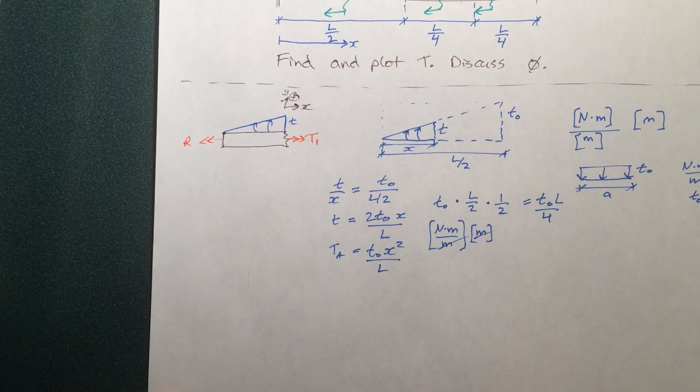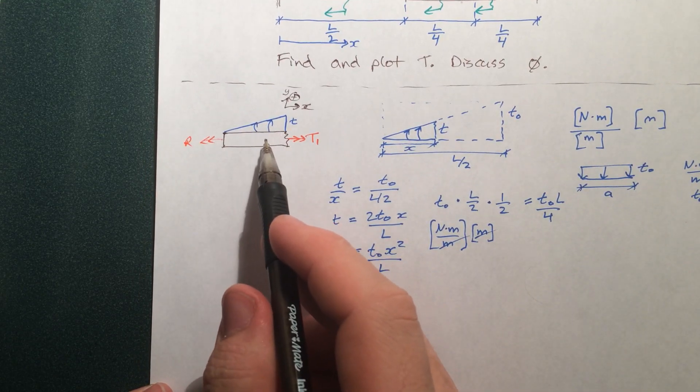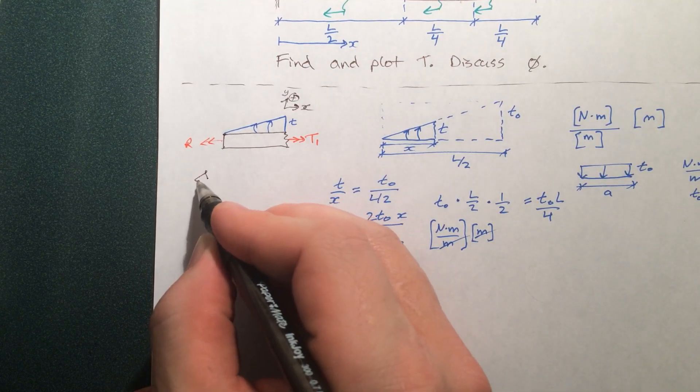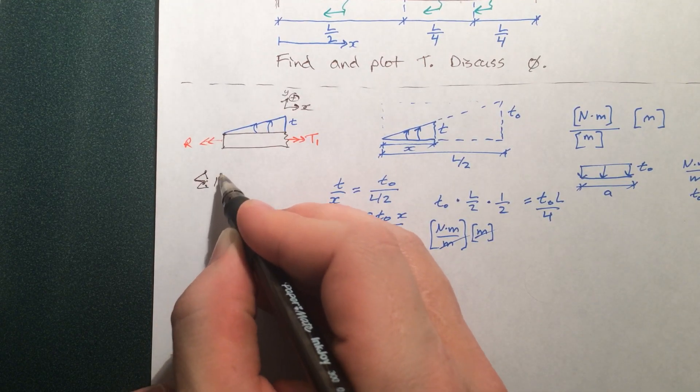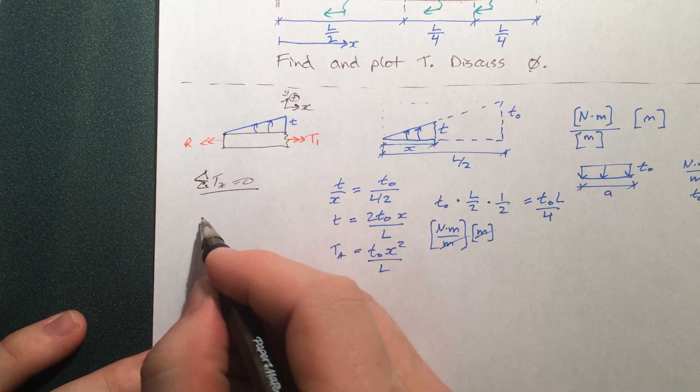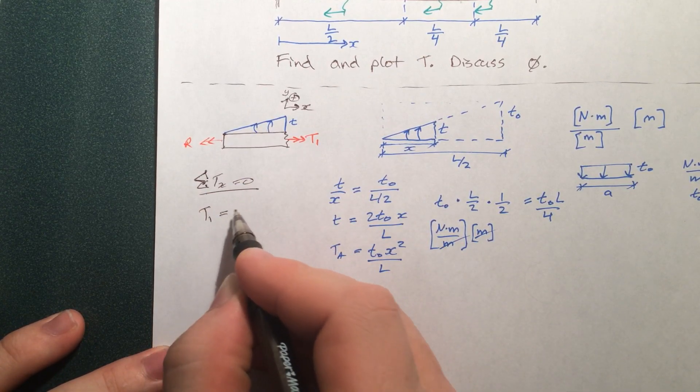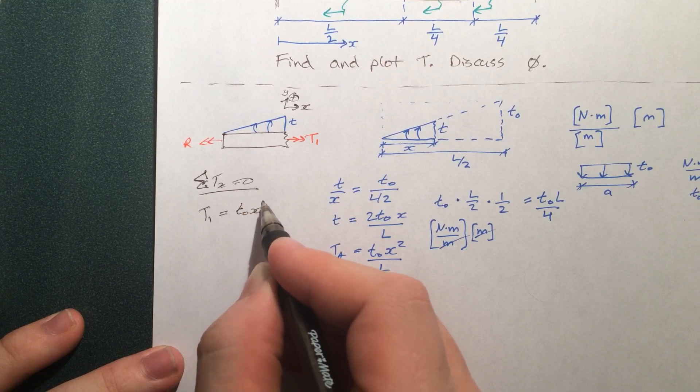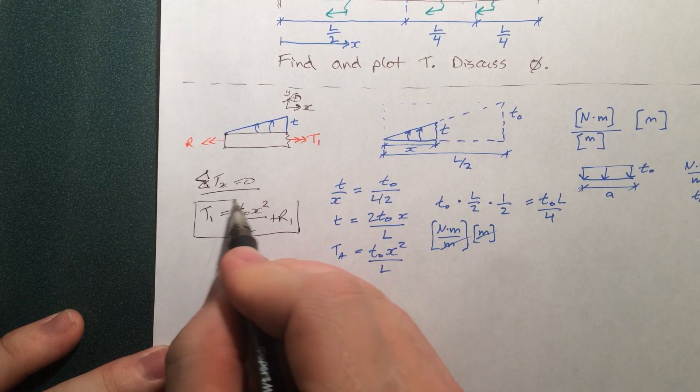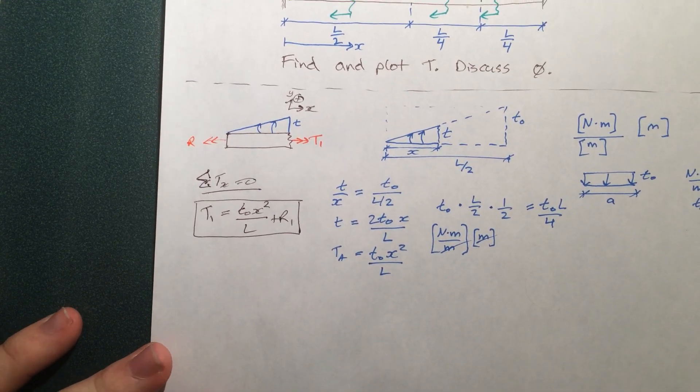So we could essentially replace this with just a single applied torque of that magnitude, but I won't. I'll just go straight ahead, say sum of the torque is equal to 0, and we can find T1. There we go.